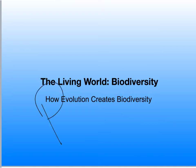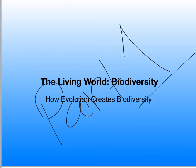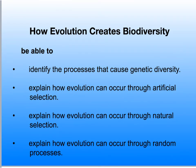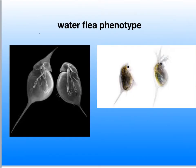How Evolution Creates Biodiversity. By the end of this video, you should be able to identify the process that creates genetic diversity, explain how evolution can occur through artificial selection, explain how evolution can occur through natural selection, and also how evolution can occur through a random process.